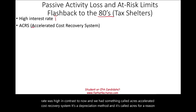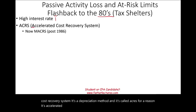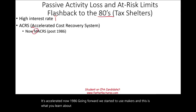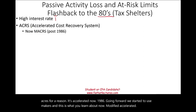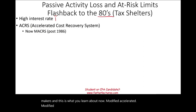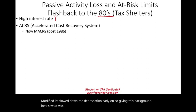Now, 1986 going forward, we started to use MACRS, which is what you learn about now — Modified Accelerated Cost Recovery System. Modified — it slowed down the depreciation early on. So giving this background, here's what was happening back in the mid-80s.